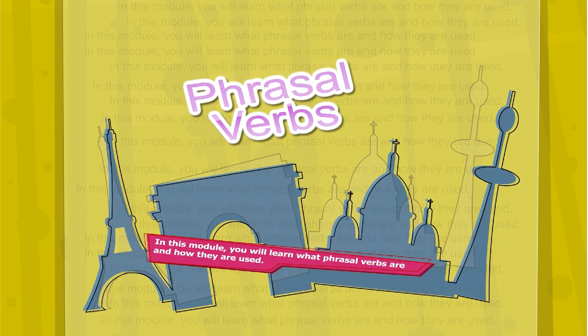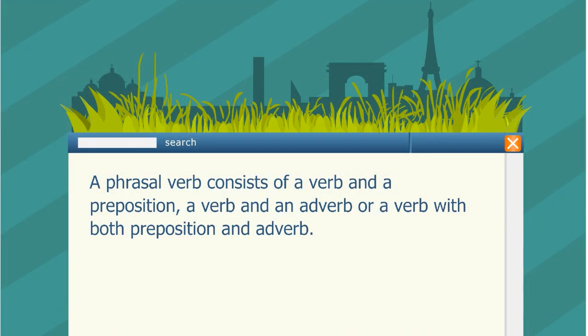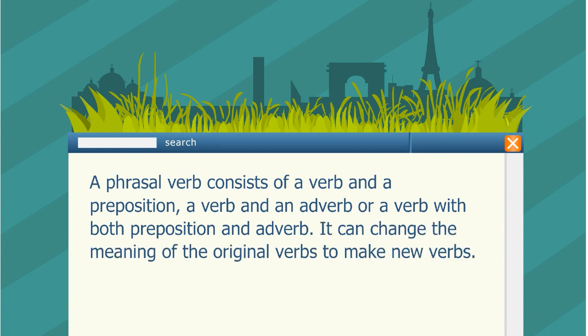Phrasal verbs. In this module you'll learn what phrasal verbs are and how they're used. A phrasal verb consists of a verb and a preposition, a verb and an adverb, or a verb with both preposition and adverb. It can change the meaning of the original verb to make a new verb. Let us look at the use of phrasal verbs with an example.